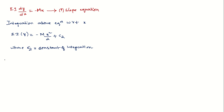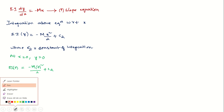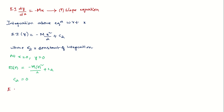To find C2, we again apply the boundary condition at A: at x = 0, y = 0, since there is no deflection at a fixed end. Substituting: EI(0) = -M(0²/2) + C2, so C2 = 0. Therefore the deflection equation is EI·y = -M(x²/2) — this is Equation 2, valid at any section x.